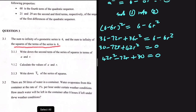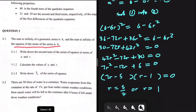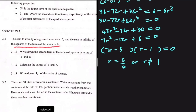Taking a common factor of 6 gives 7R squared minus 12R plus 5 equals 0. Factorizing — though the quadratic formula is easier here — gives (7R minus 5)(R minus 1) equals 0. So R equals 5/7 or R equals 1. R cannot equal 1 if our series is converging, so R equals 5/7.